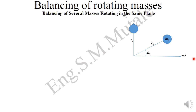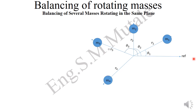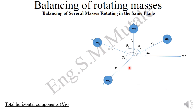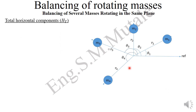Mass m2 subtends angle theta 2. You can have another mass at radius r3, calling it m3, with angle theta 3, and another one — mass 4 — at radius r4 from the reference phasor. We are trying to balance these masses.